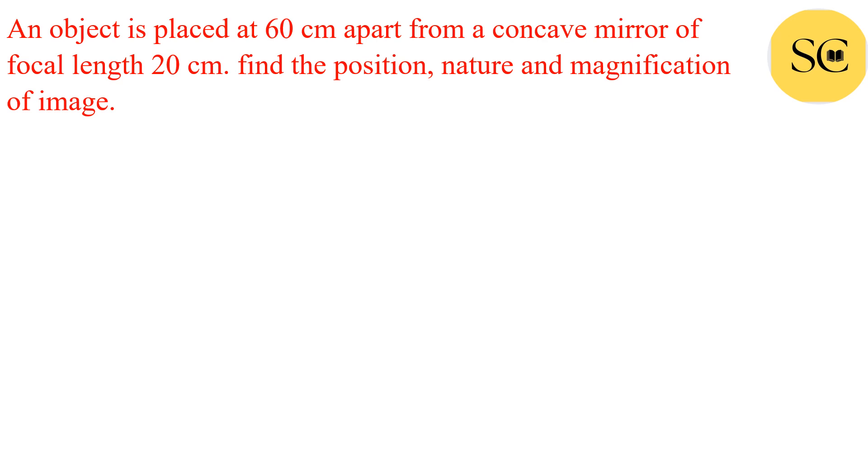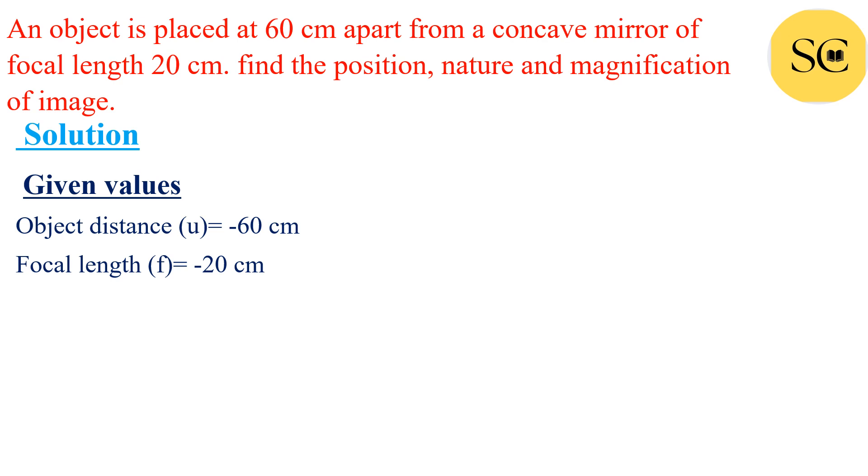Now first of all we will have to write the given values. We have been given object distance u. This is 60 cm and we will mark negative sign before the object distance according to the new Cartesian sign convention method.